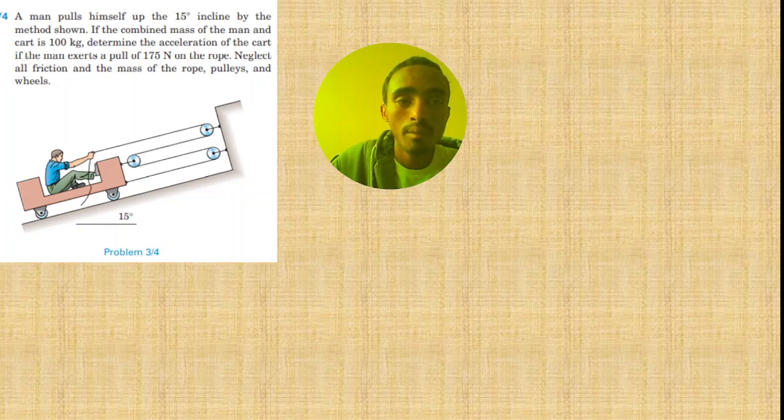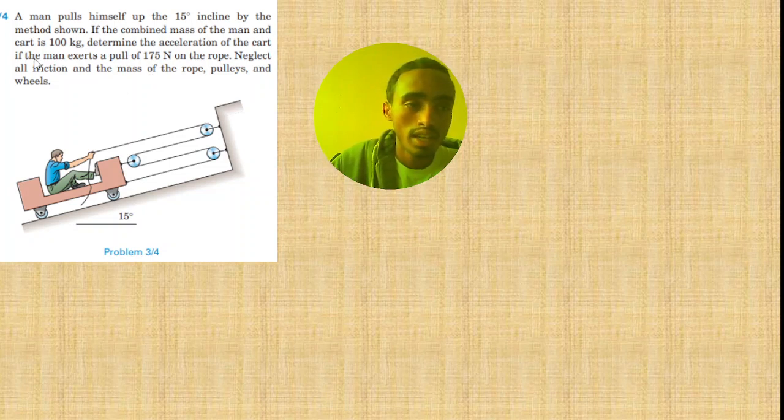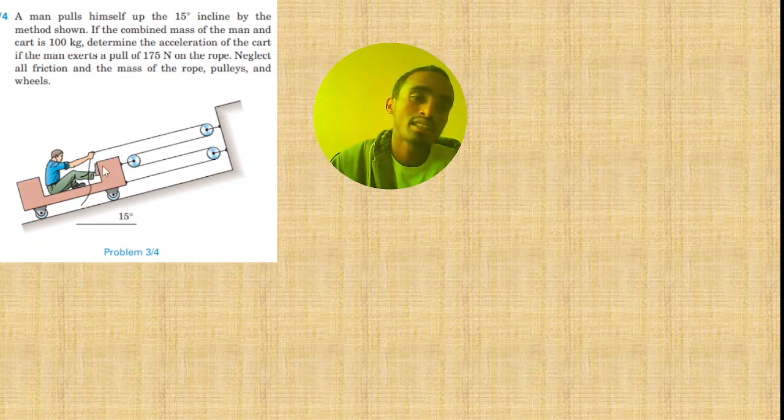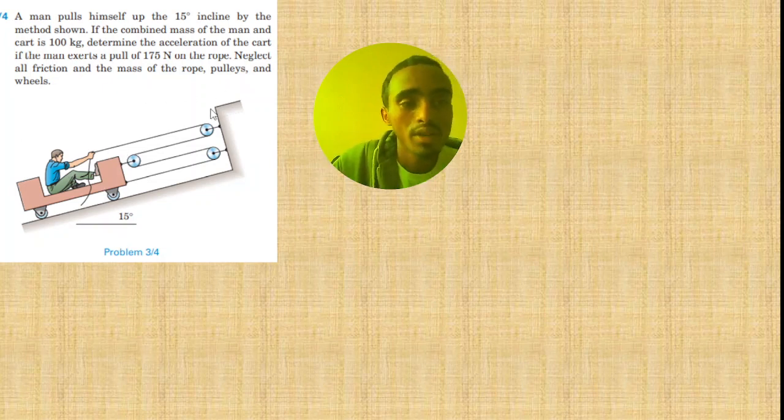Consider the mass of the man and the crate which is 100 kilogram. Determine the acceleration of the cart if the man exerts a pull of 175 newtons on the rope and neglects all the frictional mass of the rope and the wheel. So the mass of the pulley and the wheel is neglected. The pulley is inclined and here the man pulls the rope in this direction at 175 newtons.